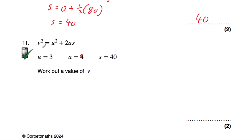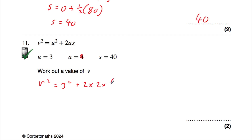Question number 11: v squared equals u squared plus 2as, with u equal to 3, a equal to 2, and s equal to 40. We want to work out a value of v. So v squared equals 3 squared, plus 2 times 2 times 40. 2 times 2 times 40 is 160, and 3 squared is 9, so v squared equals 9 plus 160.